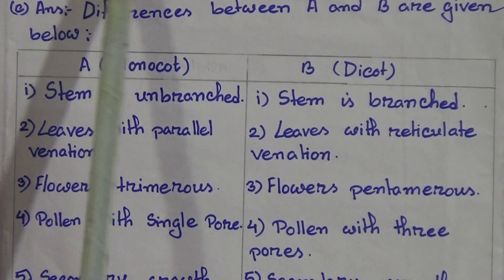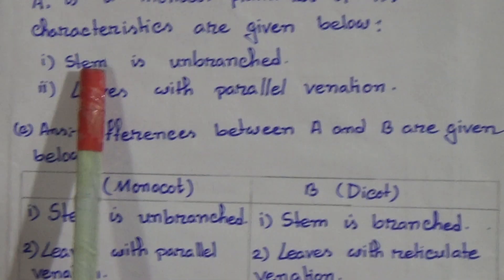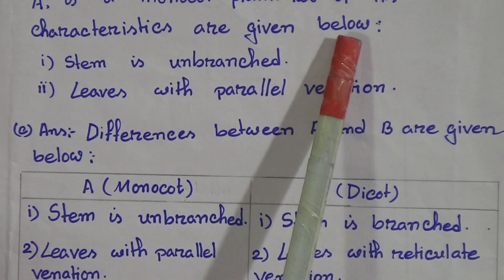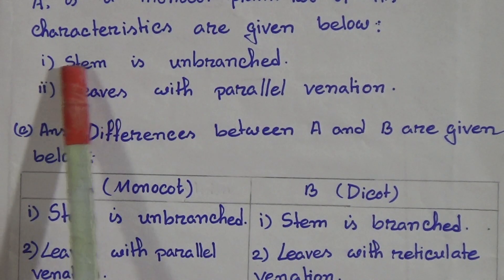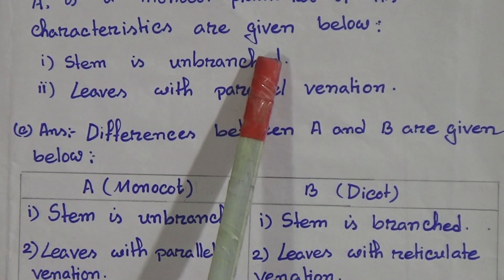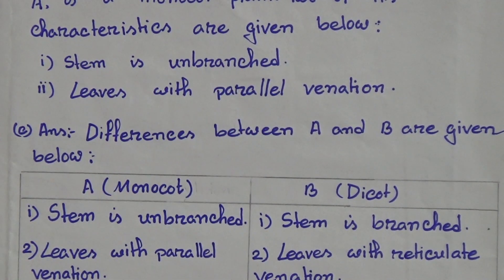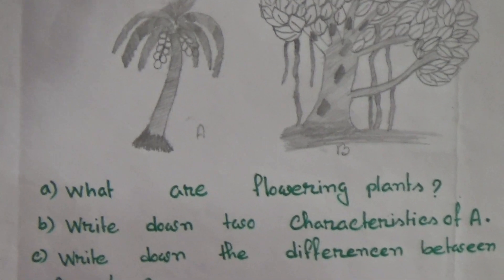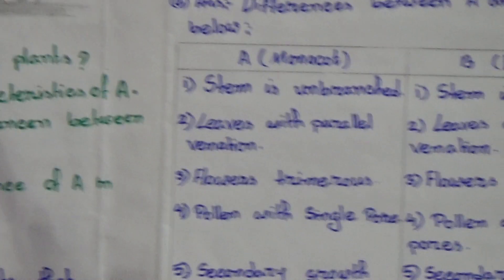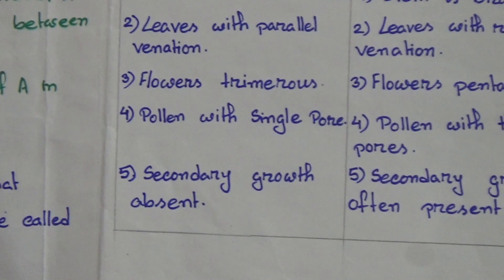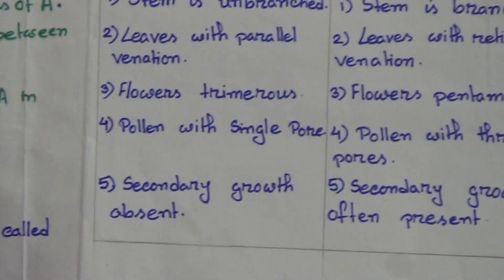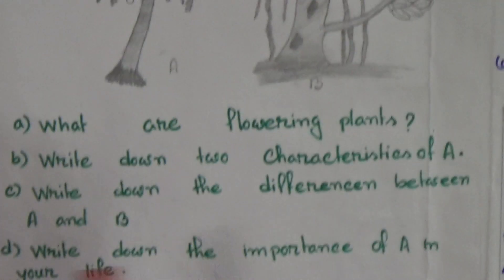Characteristic one: the stem is unbranched. In the coconut tree, the stem is not branched. Characteristic two: leaves with parallel venation. Their leaves are in parallel venation.